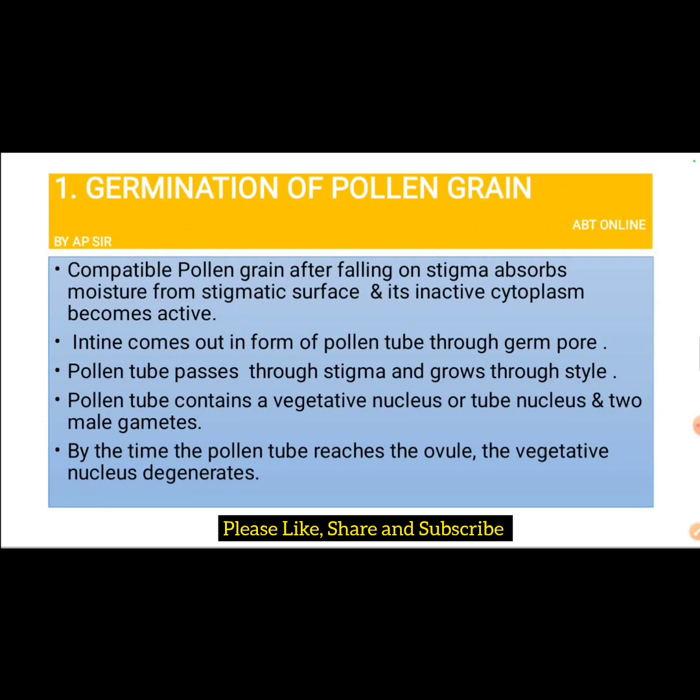By the time the pollen tube reaches the ovule, the tube nucleus or vegetative nucleus degenerates. So at this stage the pollen tube contains only two male gametes.